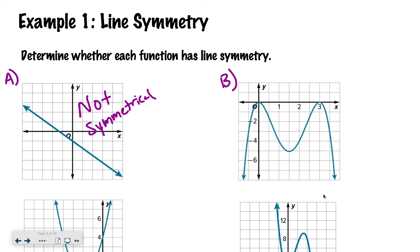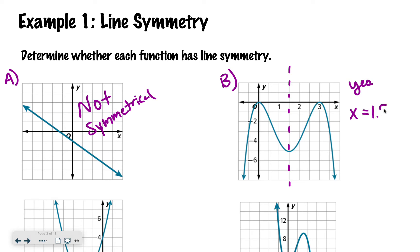We'll call this one B. It kind of looks like an M, and I think if I were to draw a vertical line right here and fold on that line, it would be the same on both sides. So this is symmetrical, and it's symmetrical at x equals 1.5, because it's between 1 and 2.